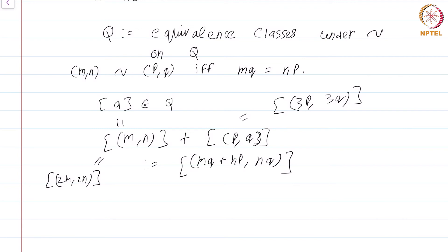This means that the right hand side that I have written, I have written a particular equivalence class that should not change if I change the particular choice of representatives for the equivalence class [m,n] and the equivalence class [p,q]. If I had chosen a different representative, I should still get the same answer.